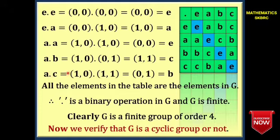A·C: (1,0)·(1,1) = (1+1, 0+1) = (0,1) = B. So A·C = B. Similarly: B·E = B, B·A = C, B·B = E, B·C = A.